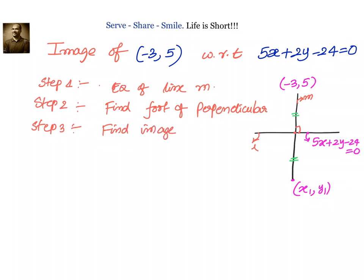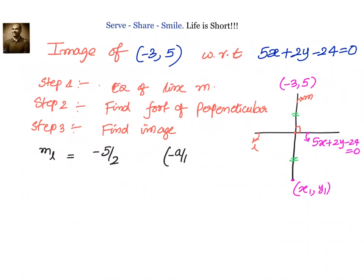Once we know the foot of perpendicular, our last step will be to find the image. We know that once we know the foot of perpendicular, it is the midpoint of the point and its image, so we can easily use the midpoint formula and find out the coordinates of image, that is x1 comma y1. So let's go ahead. First step: find out the equation of line m. For that, what is the slope of line l?